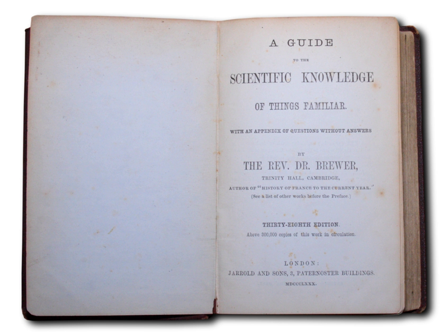His initial offer to Thomas Gerald to sell the copyright for £50 was rejected. Instead, Gerald agreed to publish the book under a profit-sharing arrangement. The ultimate success of the book meant that this arrangement proved to be very profitable for both Brewer and Gerald, with Gerald later refusing to sell his share back to Brewer even when offered £4,000.